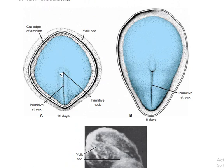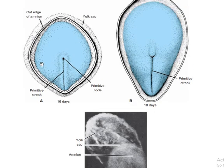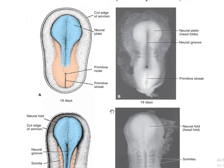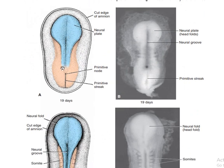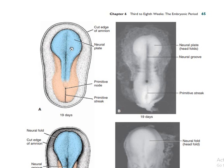You have the primitive node and primitive streak by day 16. By day 18, the primitive node becomes more prominent and the posterior portion descends to become more pointed. The mesoderm is going to migrate from the epiblast at the level of the primitive streak to come to the lateral side.